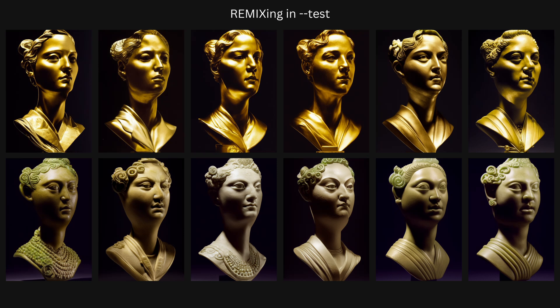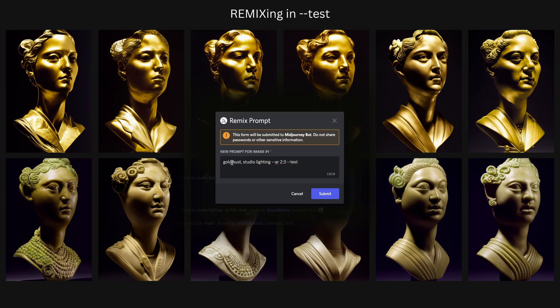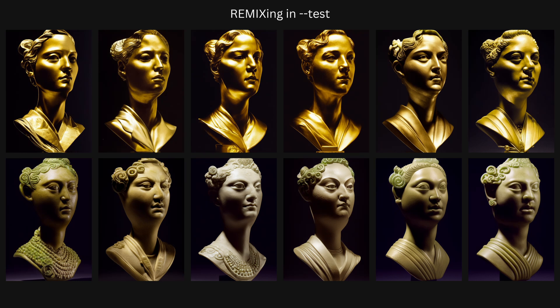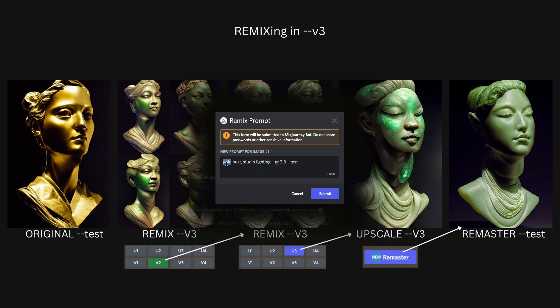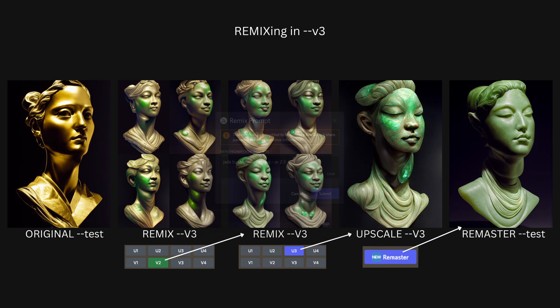Now let's examine the difference between remixing in Test and remixing in V3. With a simple prompt — a gold bust with studio lighting — I tried remixing it to be a Jade bust while still in Test. It took about 12 images to start resembling the Jade material, and incremental changes were very minimal. By comparison, remixing the same starting image in V3 was much quicker: within 2 remixes I had the basic composition I needed, and with an upscale and remaster I got much better end results than after 12 variations in Test.